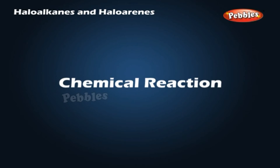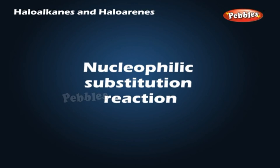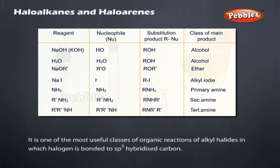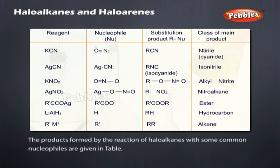Chemical reactions — nucleophilic substitution reactions: a substitution reaction takes place and the halogen atom, called the leaving group, departs as a halide ion. Since the substitution reaction is initiated by a nucleophile, it is called a nucleophilic substitution reaction. It is one of the most useful classes of organic reactions of alkyl halides in which halogen is bonded to an sp3 hybridized carbon. The products formed with some common nucleophiles are given in the table.